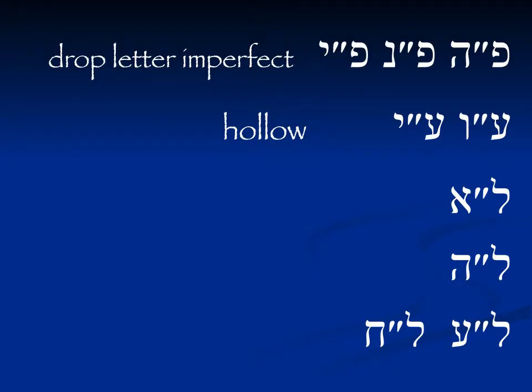Looking over some of the weak verbs — the more irregular verbs: the drop-letter imperfect is not impacted by the perfect tense. Hollow verbs are impacted — we'll look at those. The lamed-aleph verbs are not significantly impacted. Lamed-he verbs are impacted — we will look at those. Lamed-ayin and lamed-chet verbs, not so much.